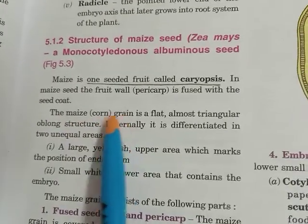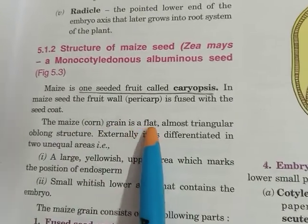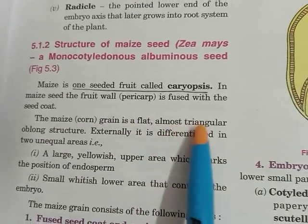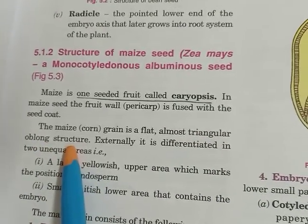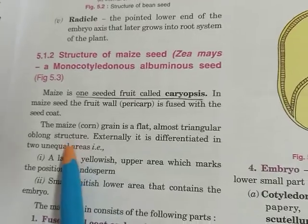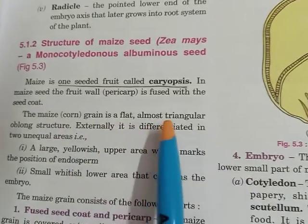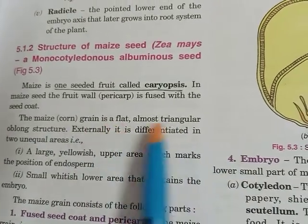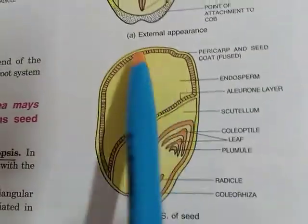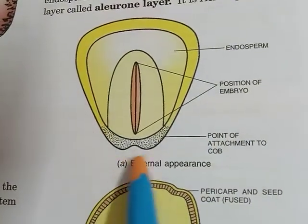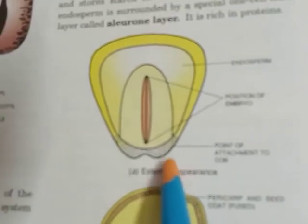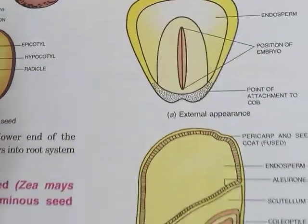The maize corn grain is a flat, almost triangular, oblong structure. You have seen corn or maize — it is flat and triangular in shape. This is the external structure of a corn or maize. It is a triangular structure.